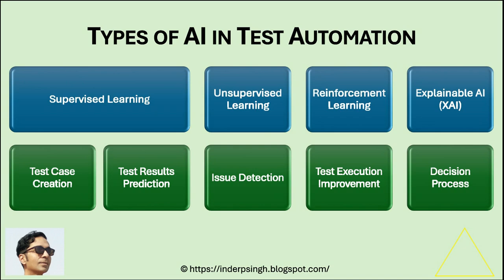Reinforcement Learning — this type of intelligent test automation enables advanced AI applications. For example, test automation through AI can learn and adjust based on test results. Such AI automation has a feedback loop in which it interacts with a test environment, receiving feedback as either rewards or penalties based on performance. The AI learns through trial and error, improving test execution over time.